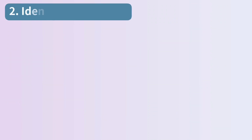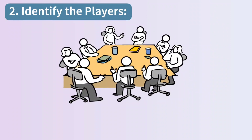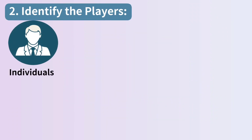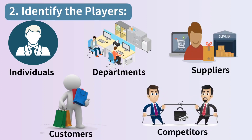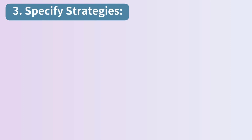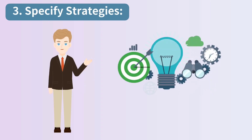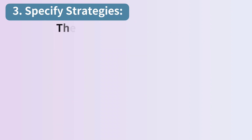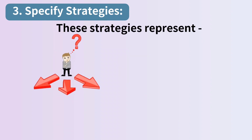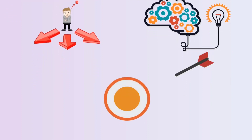Step 2: identify the players. Determine who the relevant players or stakeholders are in the given scenario. This could be individuals, departments, suppliers, customers, or competitors. Step 3: specify strategies. Define the possible strategies that each player can adopt. These strategies represent the available choices or actions they can take to achieve their goals within the context of the problem.